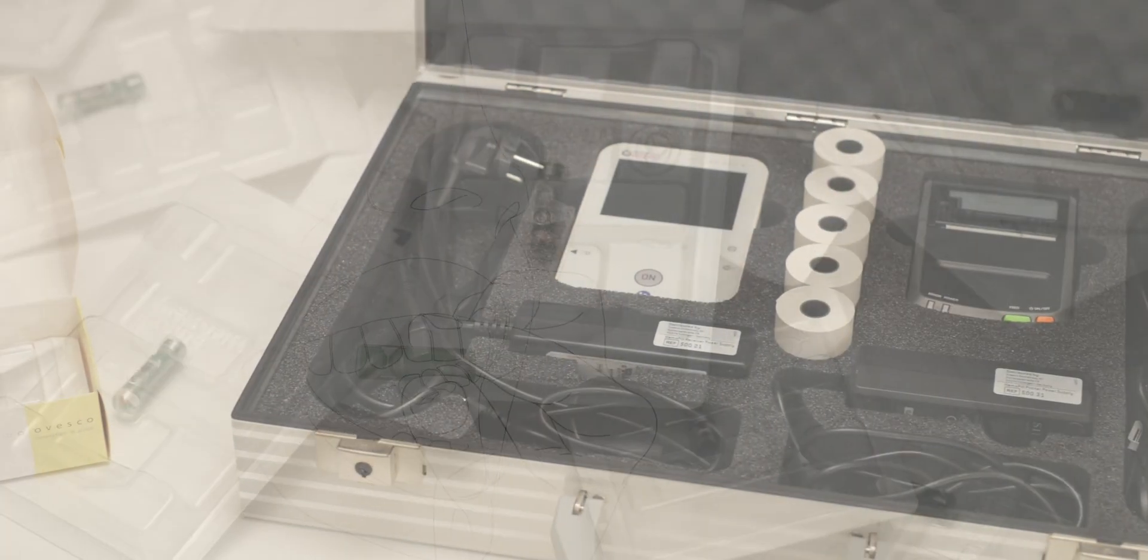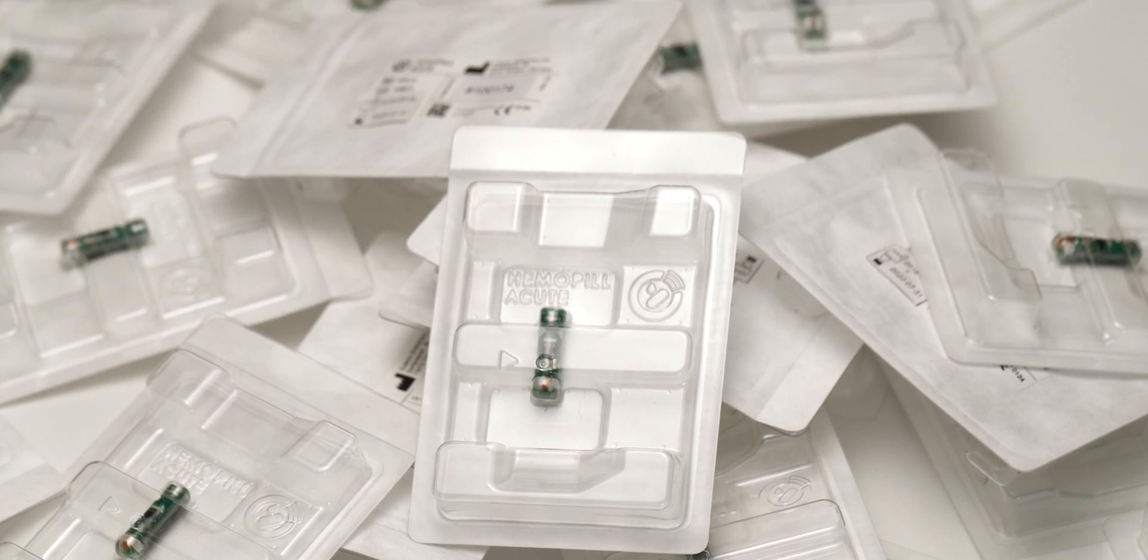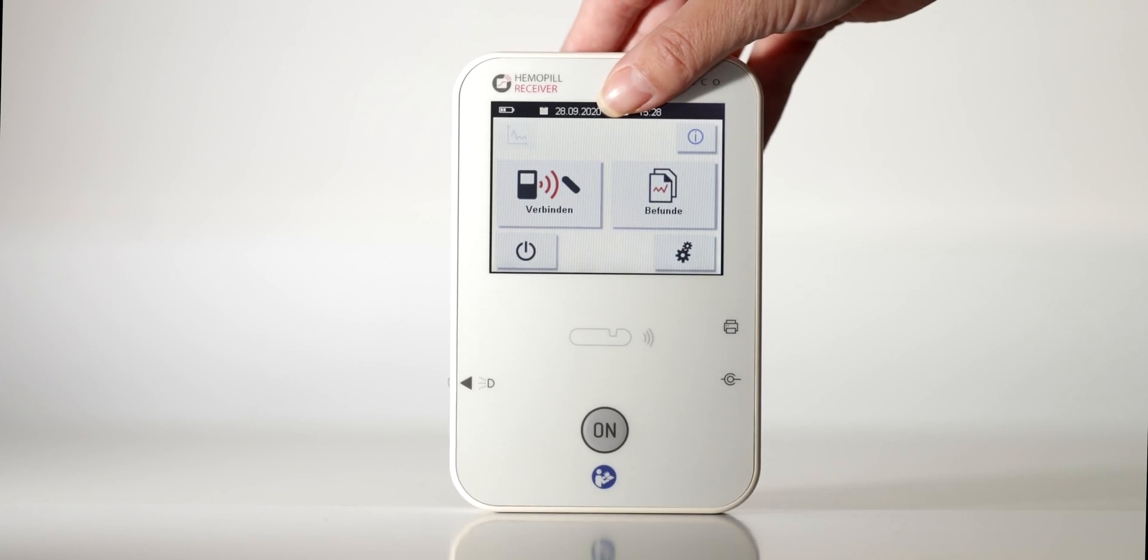The system consists of a small capsule with an optical sensor, the Hemopill Acute, which transmits measured values via radio to the portable Hemopill receiver.